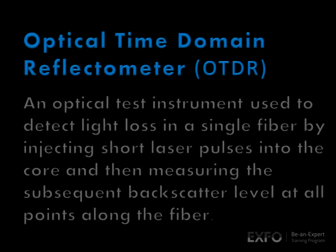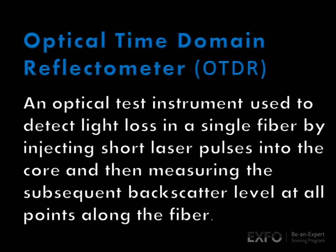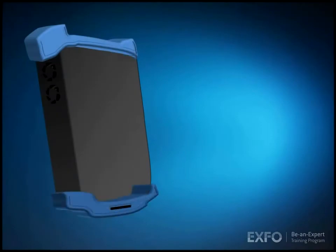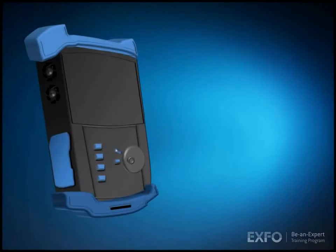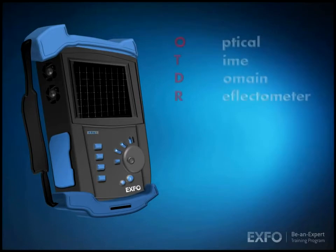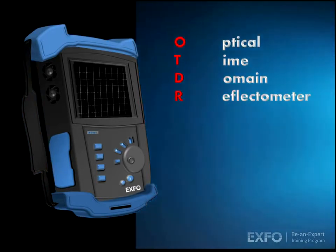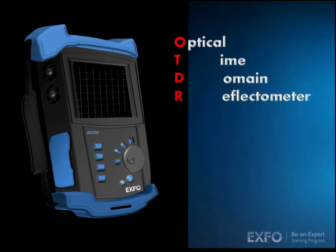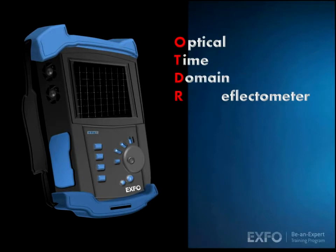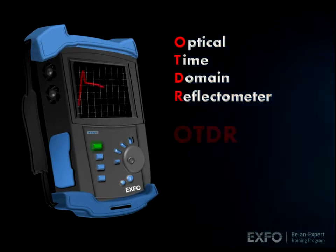Optical Time Domain Reflectometer — an optical test instrument used to detect light loss in a single fiber by injecting short laser pulses into the core and then measuring the subsequent backscatter level at all points along the fiber. Breaking down the name reveals that an OTDR conducts timed measurements of reflected light.